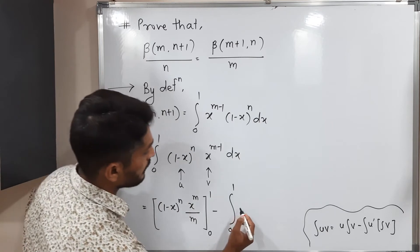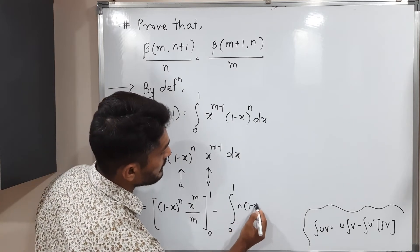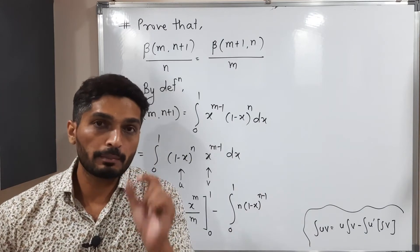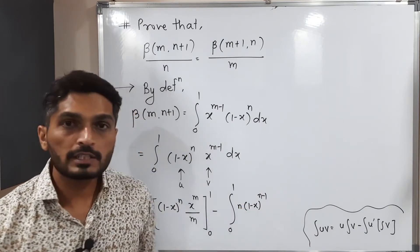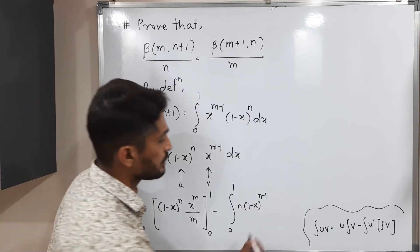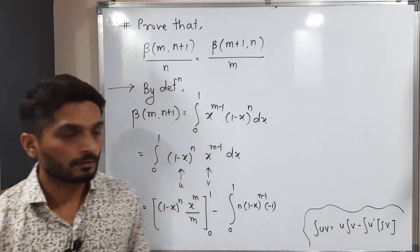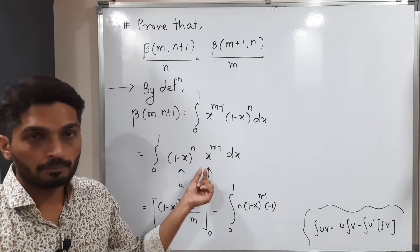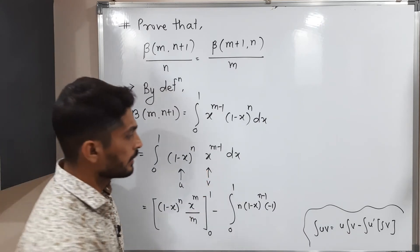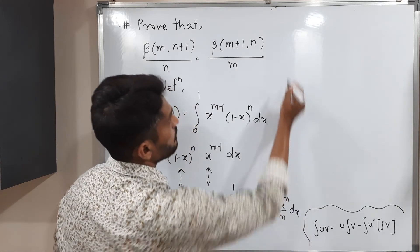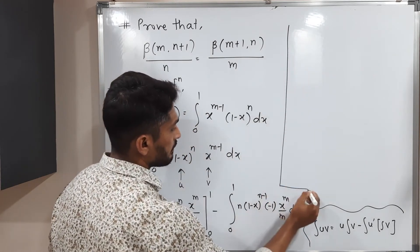n will come here, n times 1 minus x raised to n minus 1. After that we're supposed to take derivative of that bracket also. Derivative of this bracket is minus 1. So that's why I'm writing minus 1 here. After that, integration of v. What is the integration of this v? Like same as this. Getting? So it will be x raised to m upon m dx.